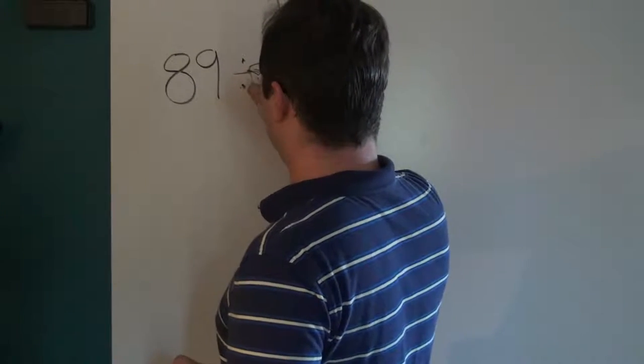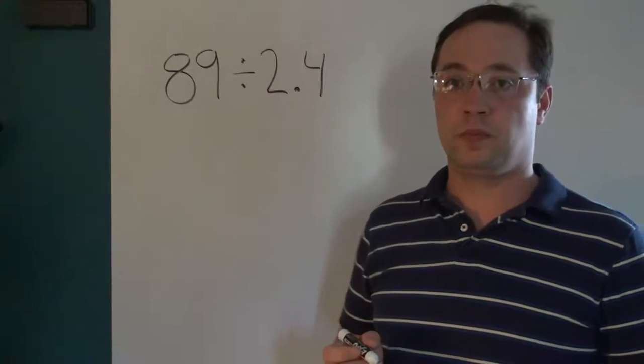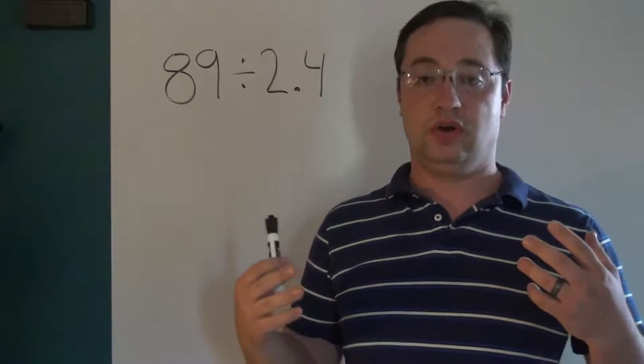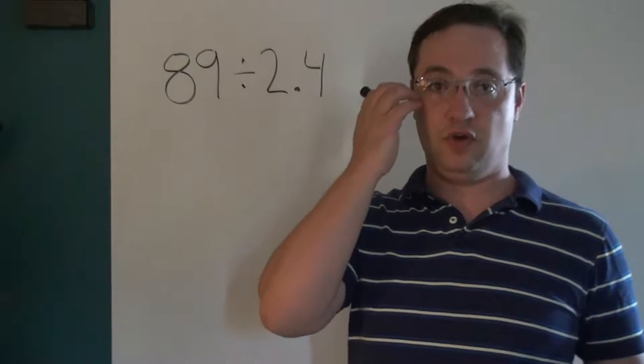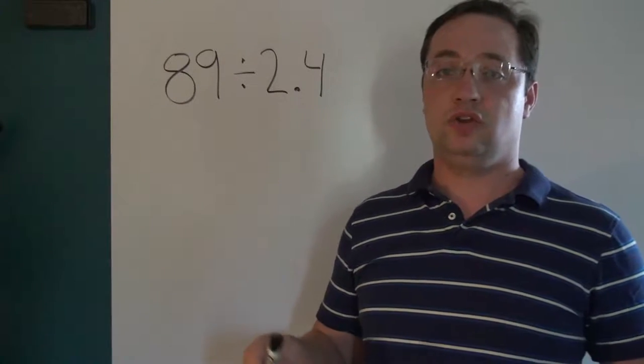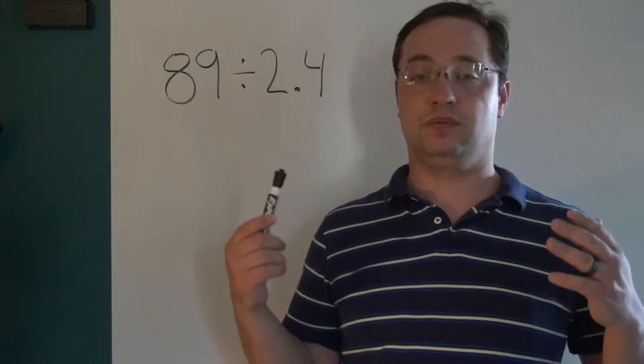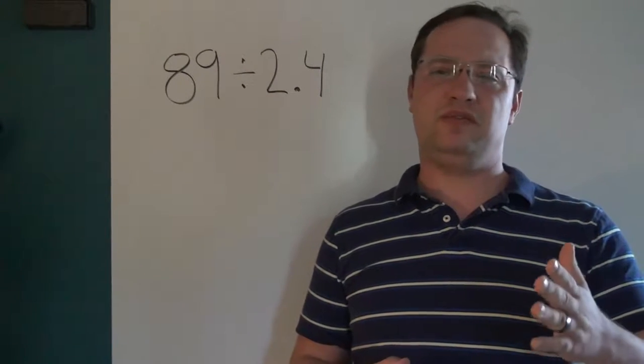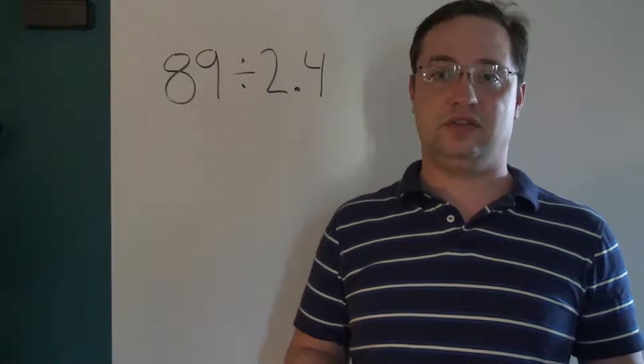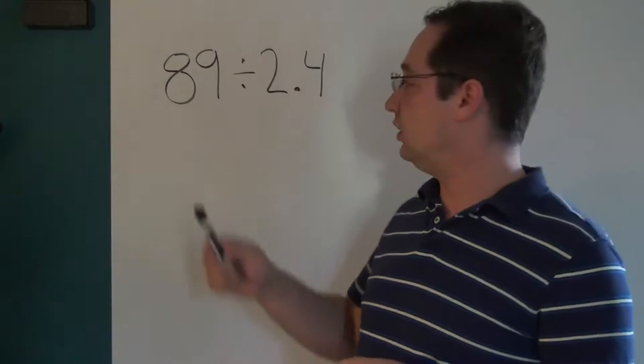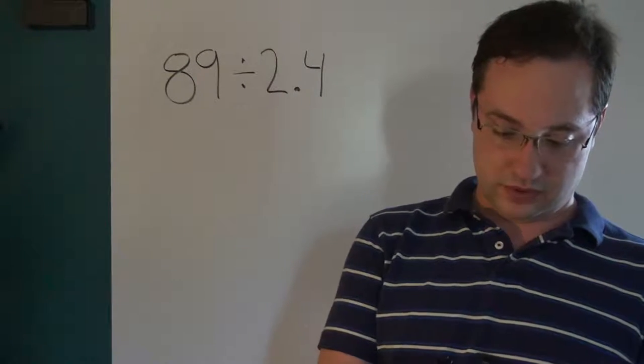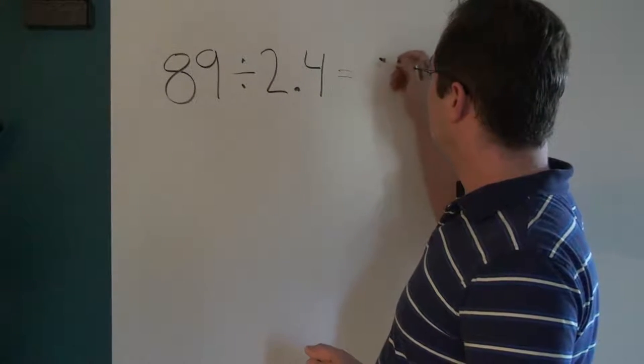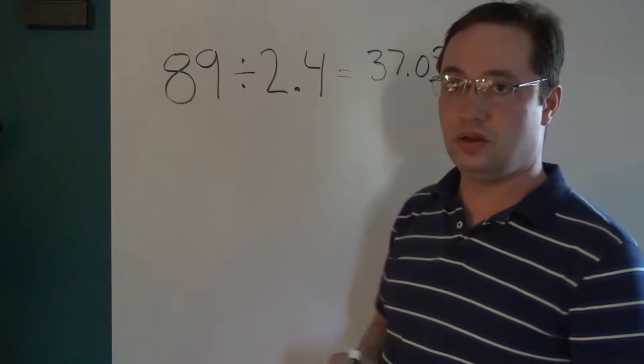And we want to convert that to inches. The conversion factor is roughly 2.4 centimeters to an inch. So this would be divided by 2.4. If we actually carried out this operation, 89 divided by 2.4, that's 37.08.